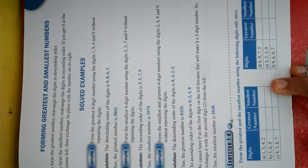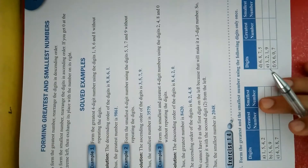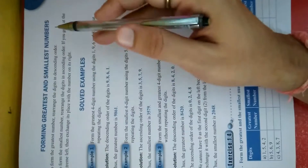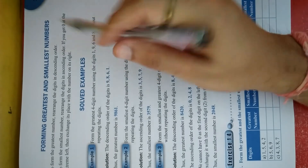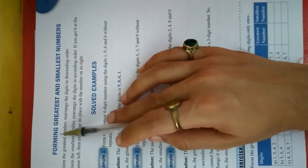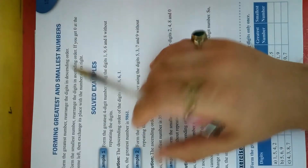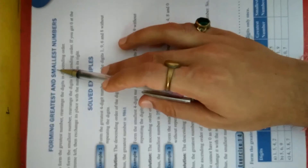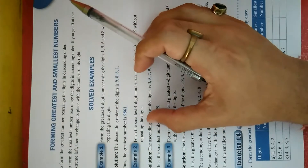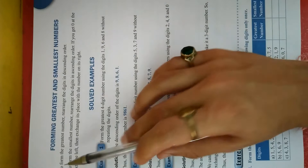Hello class, welcome to Erudite School of Learning. In our last class we finished exercise 1.3. Before the next exercise, we will learn a very easy topic: how to form greatest and smallest numbers. We are on page number 15 and we need to start a new topic called 'forming greatest and smallest numbers.' Students, we will be given certain digits, and using those digits we need to form the greatest possible number and also the smallest possible number.